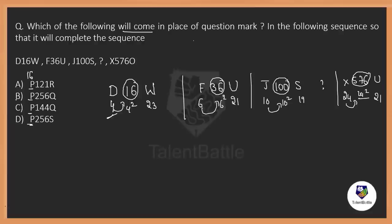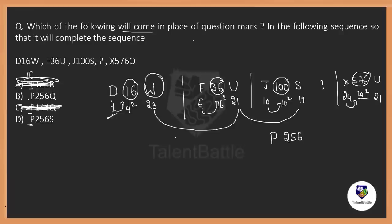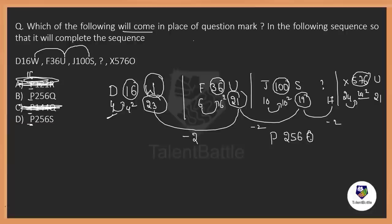Now look at the options — everywhere the first alphabet is P. The number for P is 16, so first check 16 squared. 16 squared is 256. That means it should be either option B or option D, so options A and C are wrong. It should be P and 256. Now we need to identify the last alphabet. W is 23, 23 minus 2 is 21, 21 minus 2 is 19. The next one should be 19 minus 2 — which is 17. Which alphabet stands for 17? It is Q. So the answer is option B.